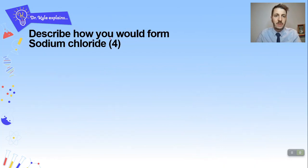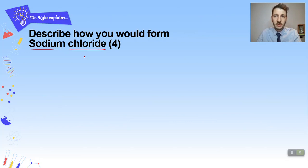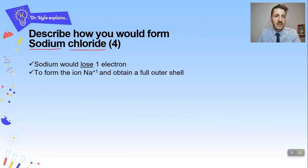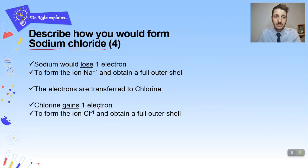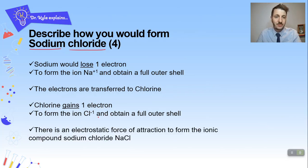Now describe how sodium chloride is formed. We know it's ionic because it's a metal and a non-metal. Sodium would lose one electron — it's in group one — to form the ion Na⁺ and obtain a full outer shell. The electrons are transferred over to chlorine. Chlorine gains one electron to form the ion Cl⁻ and obtain a full outer shell. There is an electrostatic force of attraction to form the ionic compound sodium chloride.